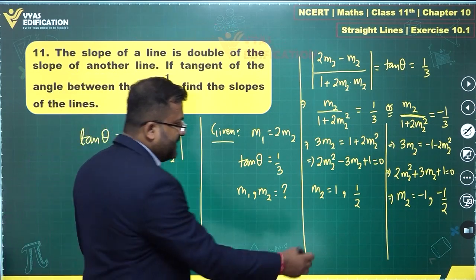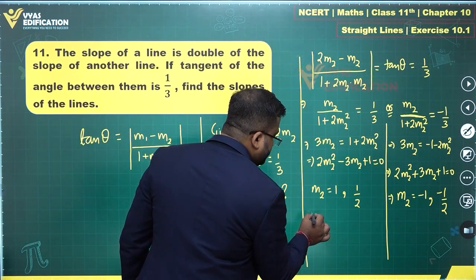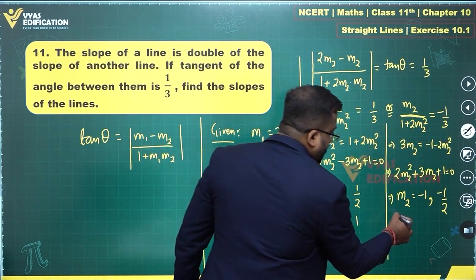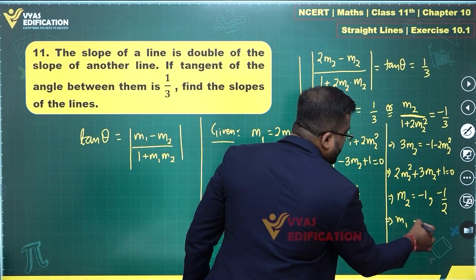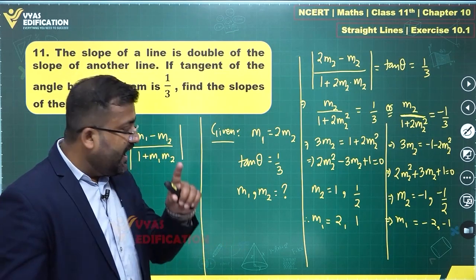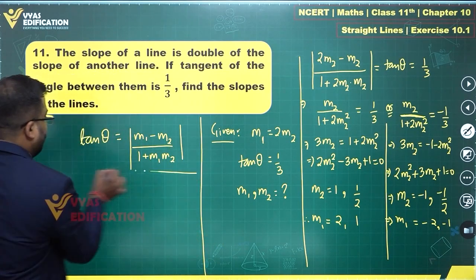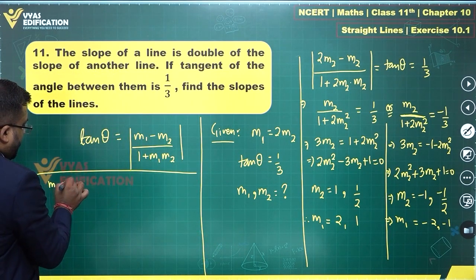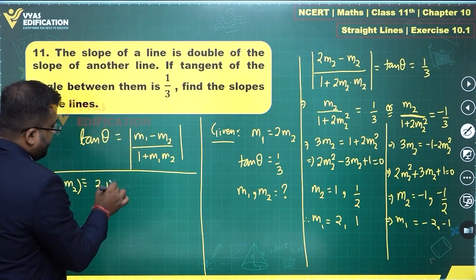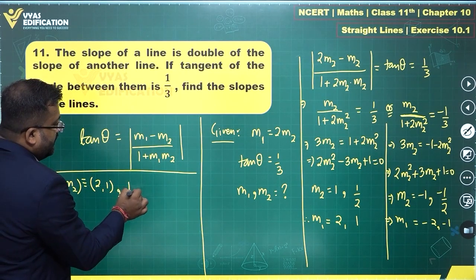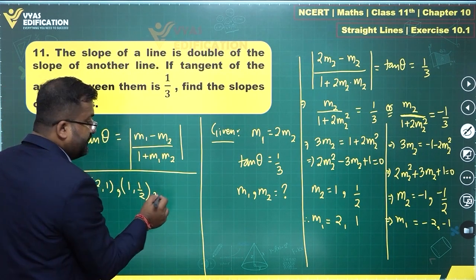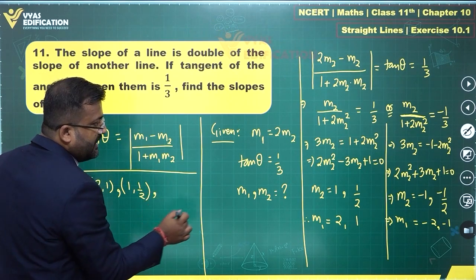If M2 is equal to 1, therefore M1 is equal to 2, 1. Or here also M1 will be equal to minus 2, minus 1. So the pair of values for M1, M2 will be equal to 2, 1 or 1, 1 by 2. But we will have to check whether all of these possibilities are correct or not.